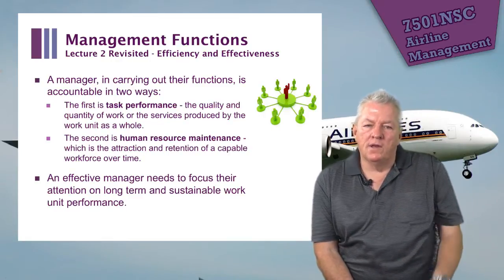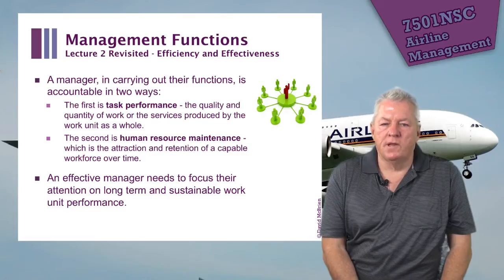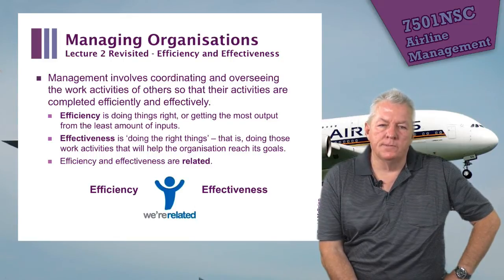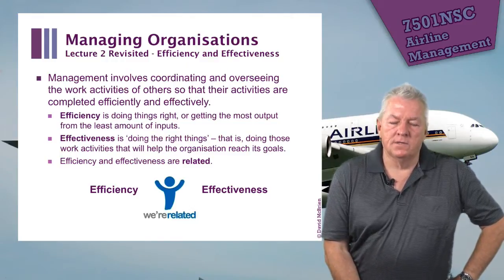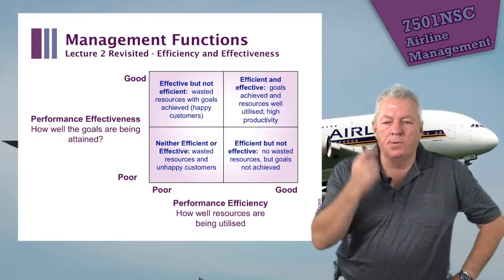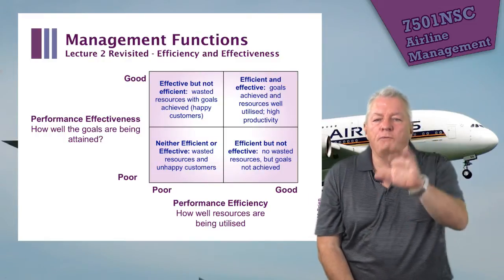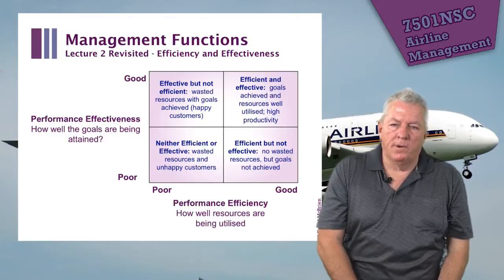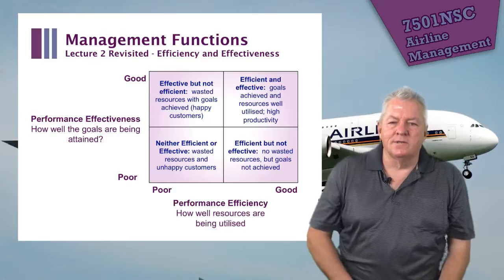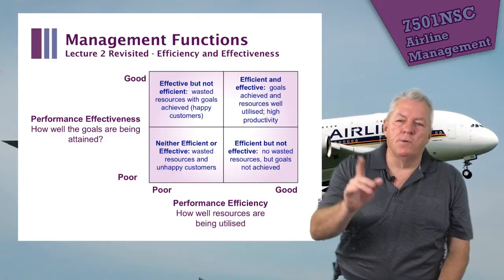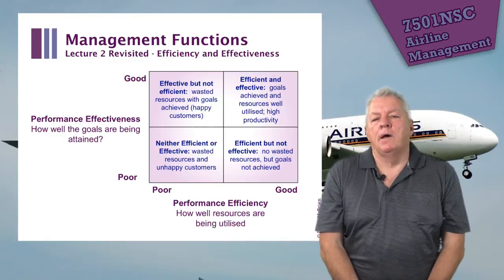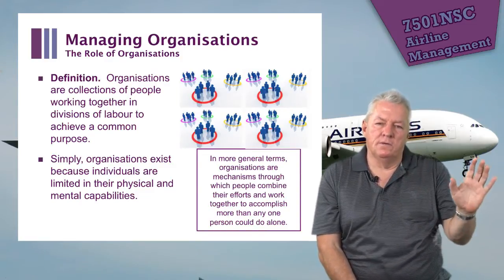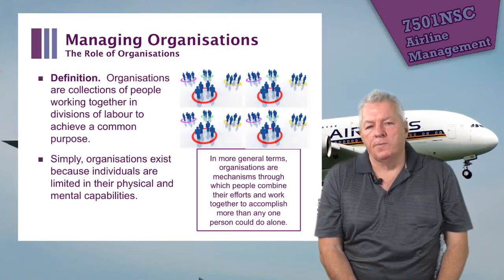The way employees are managed can affect the organization's financial performance, and managerial ability has been shown to be important in creating organizational value. Managers are responsible for task performance and human resource management, and for long and sustainable work performance. We talked about efficiency and effectiveness — if you plot performance efficiency against performance effectiveness, there are four general possibilities. You need to be both efficient and effective to get maximum returns.